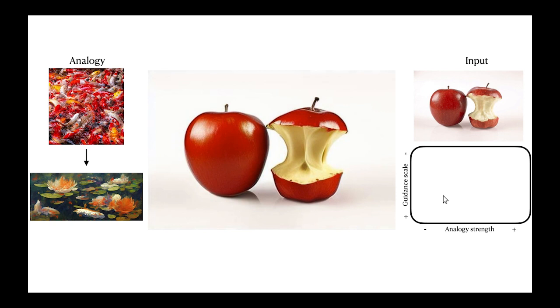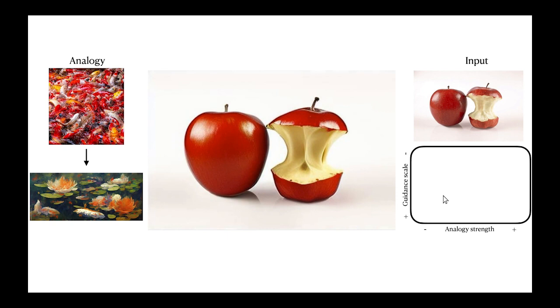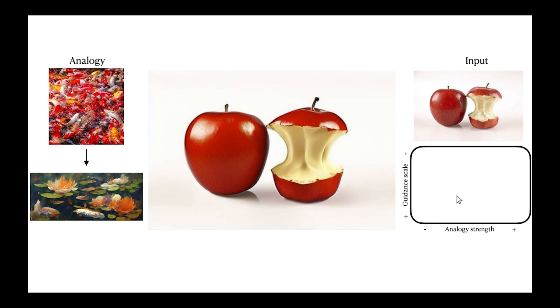Lastly, we can pre-compute the analogy at different strengths and let the user select the most compelling setting, depending on the desired scale where the analogy should be applied, and how different from the original image the result should appear.